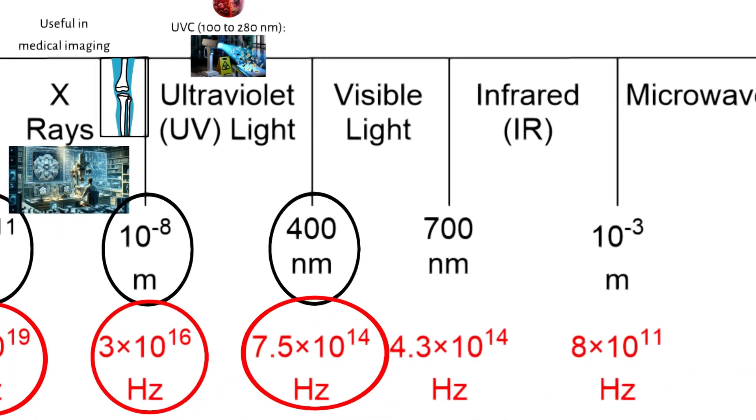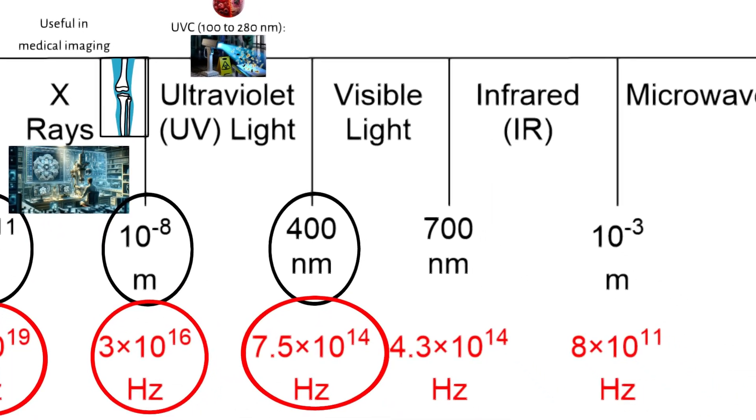Next is visible light. This is the portion of the EM spectrum that can be perceived by the human eye, covering wavelengths from roughly 400 nanometers violet to 700 nanometers red, with frequencies between 4.3 times 10 to the 14th Hertz and 7.5 times 10 to the 14th Hertz.